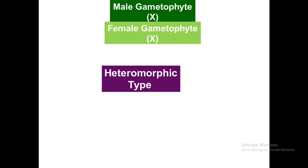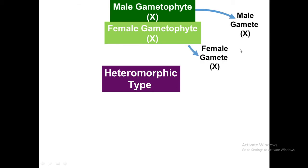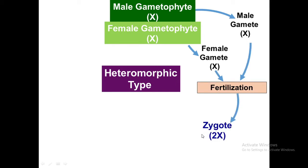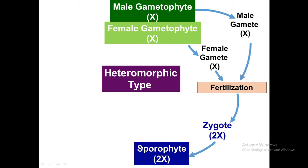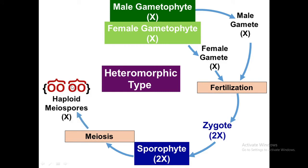The heteromorphic type life cycle begins with morphologically different male gametophyte and female gametophyte. The male gametophyte produces male gametes whereas the female gametophyte produces female gametes. After fertilization, they form a diploid zygote which germinates to form a diploid sporophytic stage. Meiosis occurs in this sporophytic stage to form haploid meiospores, which germinate and give rise to morphologically different male and female gametophytes.